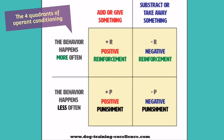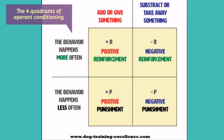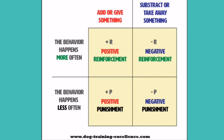Operant conditioning is composed of a quadrant. Positive reinforcement: an example would be teaching your dog that every time they sit on command they get a treat, which in turn strengthens the behavior. Basically, you are adding something positive to strengthen the behavior.